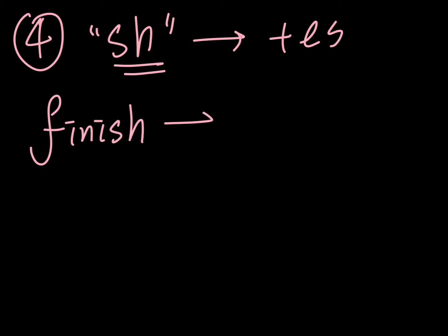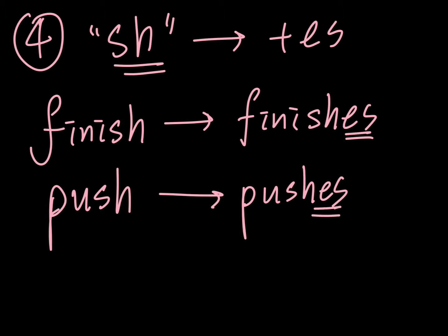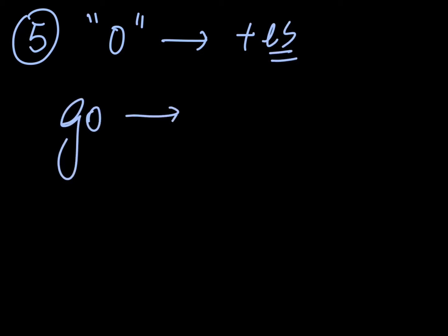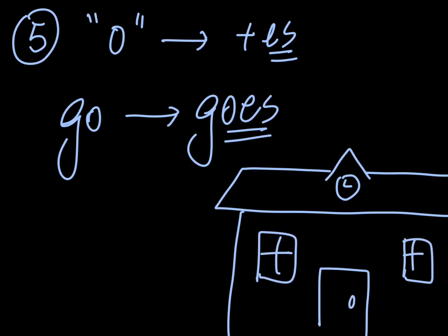If the verb ends with SH, we also add ES after it. Like 'finish' changes to 'finishes,' and 'push' changes to 'pushes' — Mary finishes her homework every day. For the last ES case, if the verb ends with O, we should also add ES after it. You should be familiar with this from Book 2A Chapter 5. For example, 'go' changes to 'goes' — Tom goes to school by school bus.